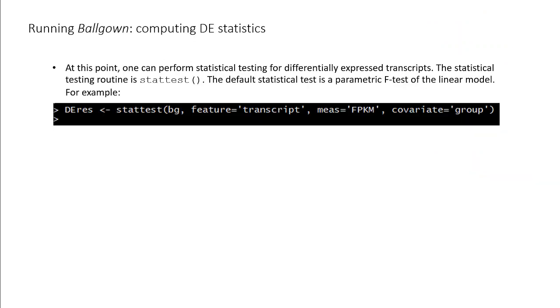Finally, we can now perform statistical testing to identify differentially expressed transcripts. The statistical testing routine is stattest. It performs a parametric F-test of the linear model, by default. Here we provide our gown object, feature name, type of measurement to use, and what comparison to make as inputs into stattest.